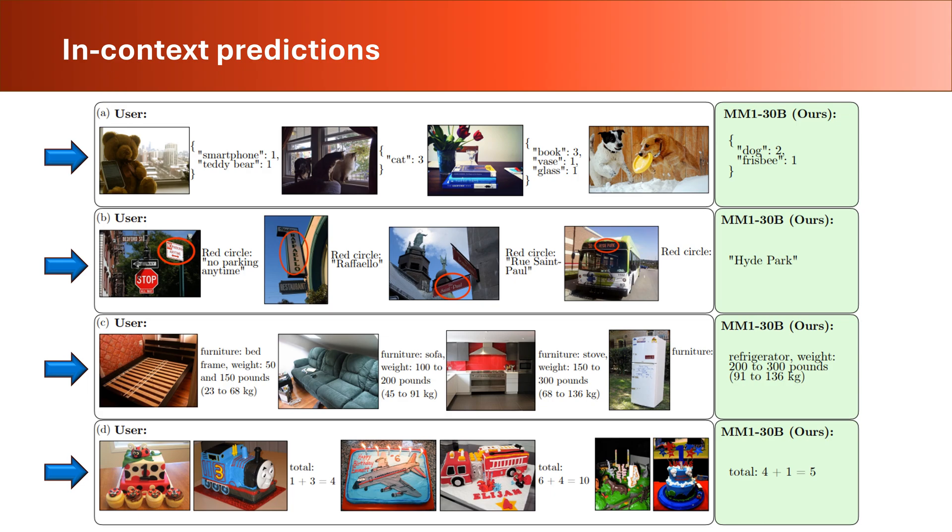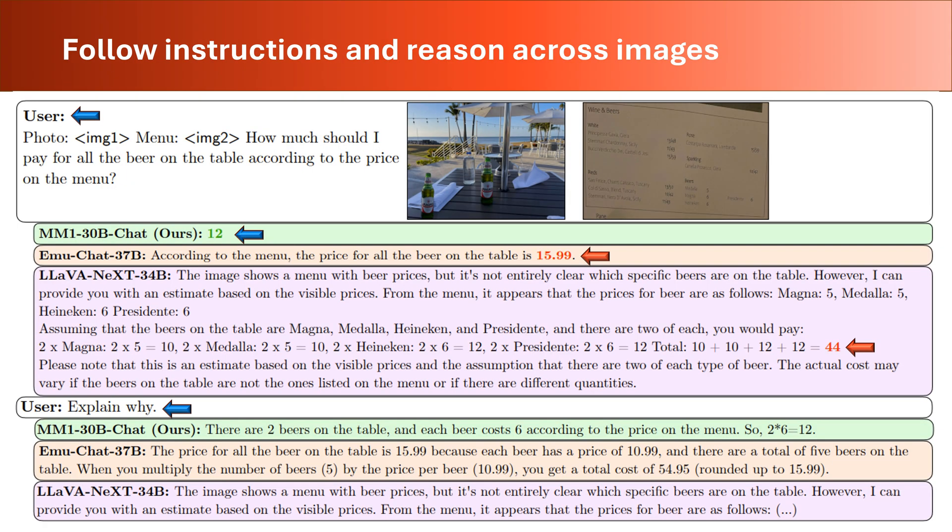I was thinking about real-world applications of such capabilities. Here we can see how MM1 model can follow instructions and reason across images. The user presents two images labeled as the image and the menu. It asks the MM1 to figure out how much he should pay for the beers based on the image and prices in the menu. The MM1 model, with 30 billion parameters, responds 12 as the price, which is correct.